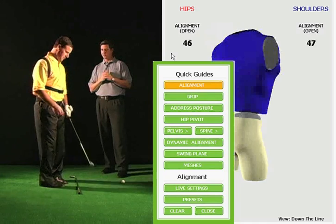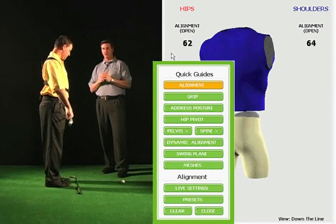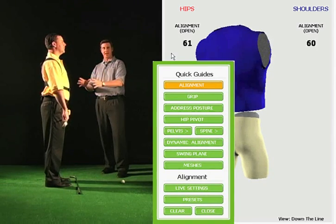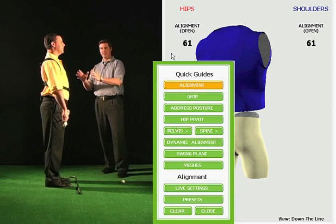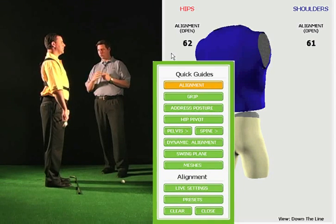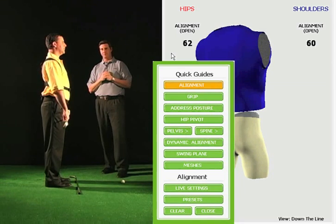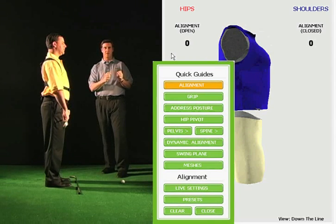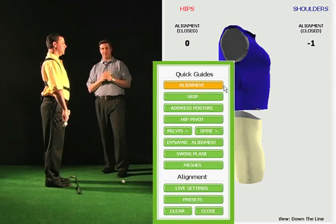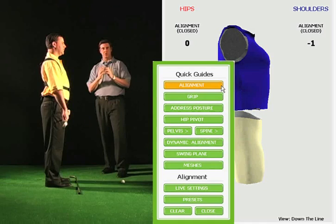The first thing I'm going to have John do is get into the calibration position. What this means is I'm going to be able to create a virtual chalk line in John's sensors. So all we're going to do is click on the two key. You can now see John's hip and shoulder alignment go to zero, meaning we now have that virtual chalk line.